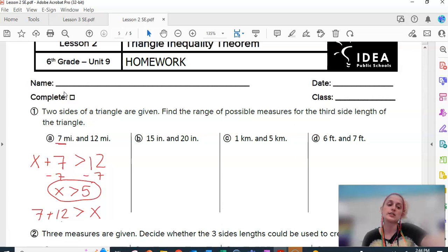Also, 7 plus 12 is 19. That's bigger than x. So, x has to be smaller than 19, while at the same time being bigger than 5. So, that's our range.